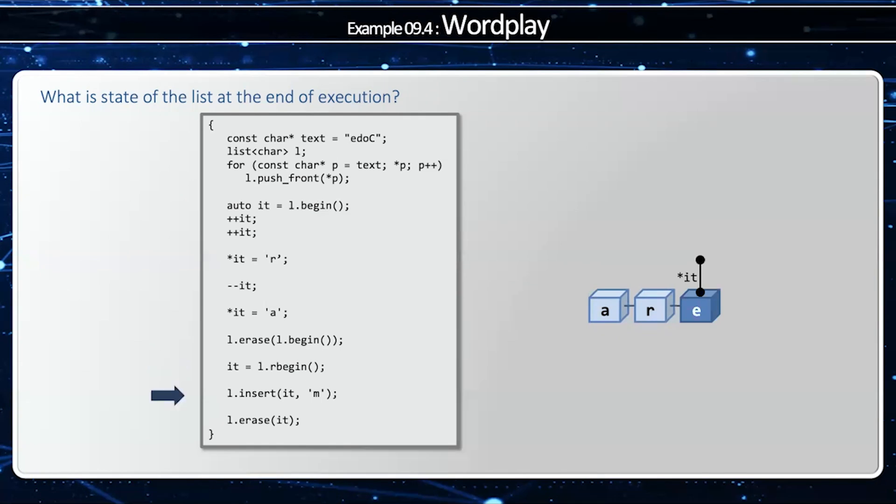And now when I use the insert method, insert will insert a new node before the one that I'm pointing to. In this case, I'm going to put an M before the E. Now if this was a vector, then adding an element to the middle would require shifting everything after it over by one slot. But with the list, it's not that way — I'm just going to add a new node and hook up the pointers, because the underlying data structure of a list is a linked list.